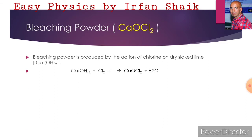Here is the equation: when calcium hydroxide, that is slaked lime, reacts with chlorine, we can produce bleaching powder, that is CaOCl2.